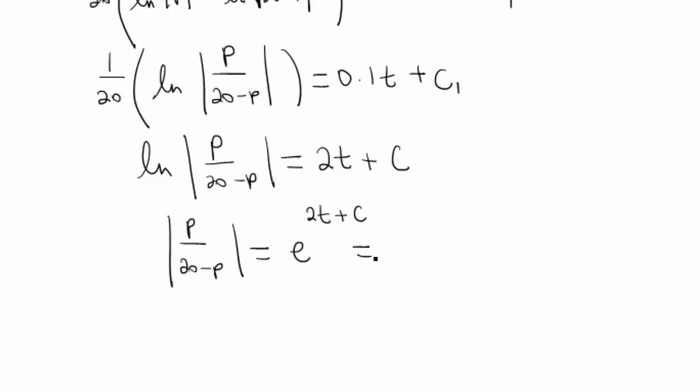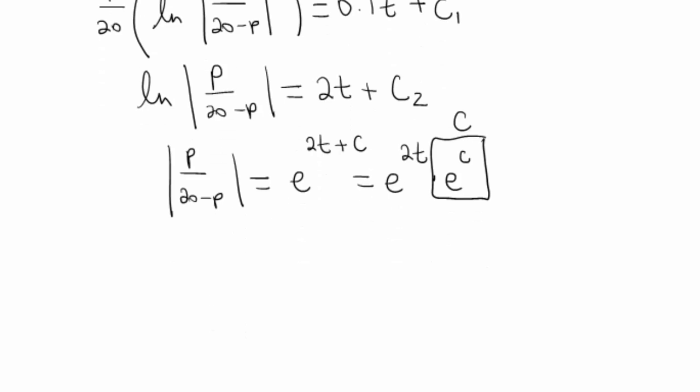We can use properties of exponents and break this up. We've got e to the 2t times e to the c, but e to the c is yet another constant. And because this is a constant, we can now ditch those absolute values, because we know that's also going to absorb the plus or minus if we needed to. So then we've got p over 20 minus p equals c e to the 2t.